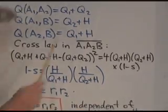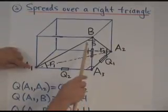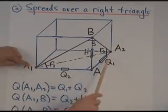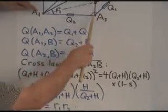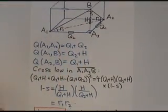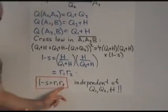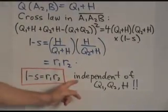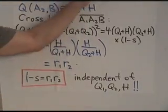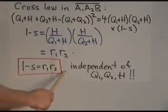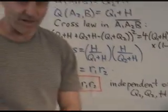And these two ratios, what are they? Well, H over Q1 plus H, that's the one there, that's R2. And H over Q2 plus H, H over Q2 plus H, that's R1. So, the answer, 1 minus S equals R1 times R2, independent of the quadrants of Q1, Q2, and H. This is a very beautiful result.